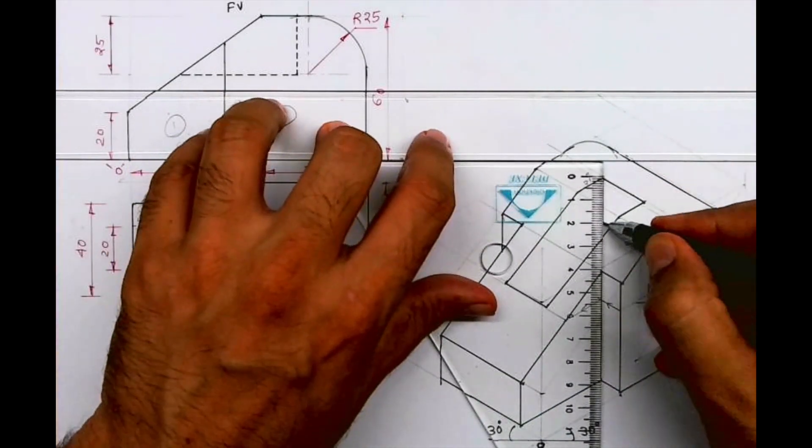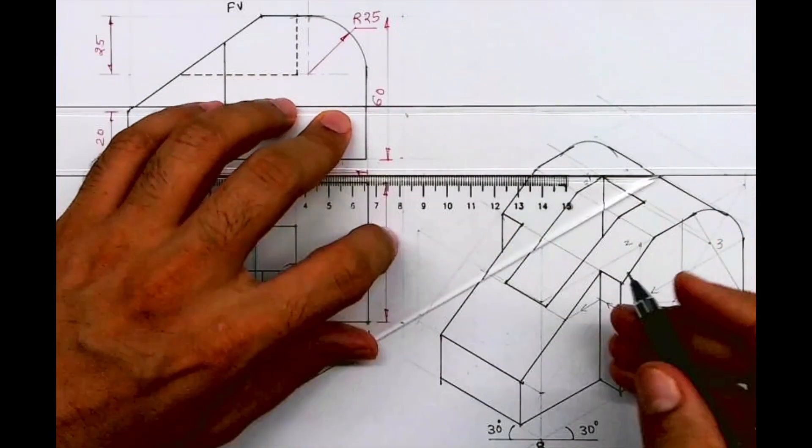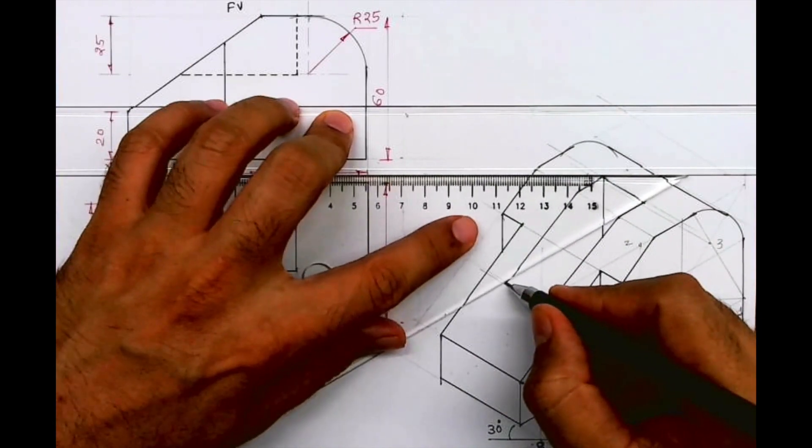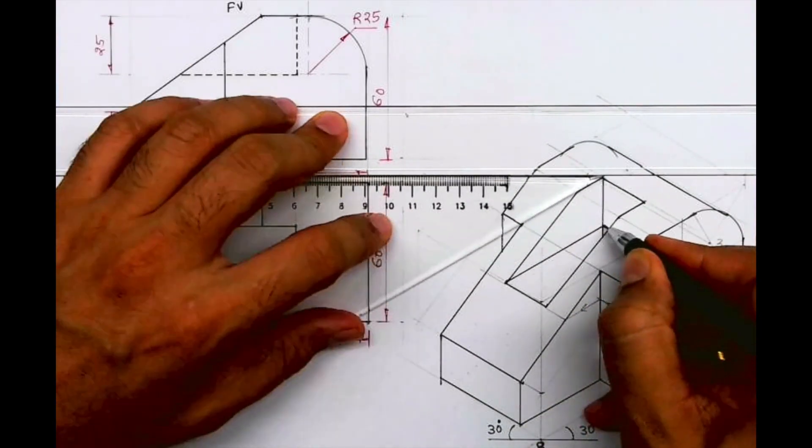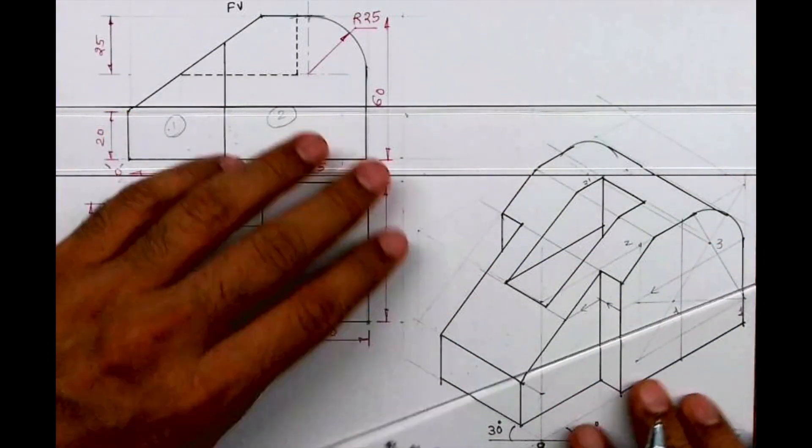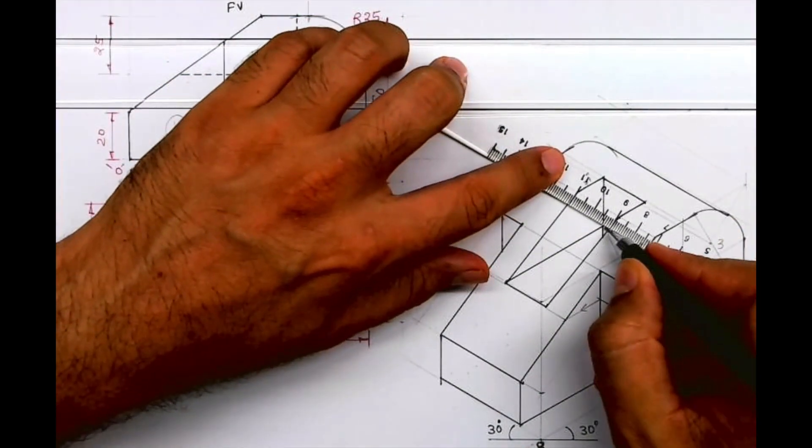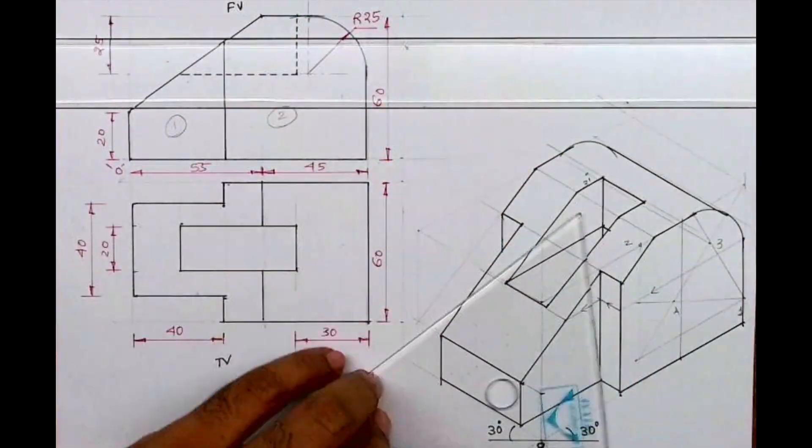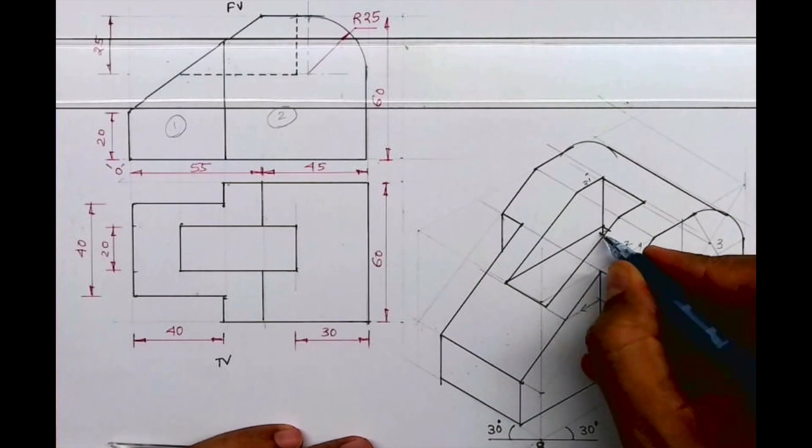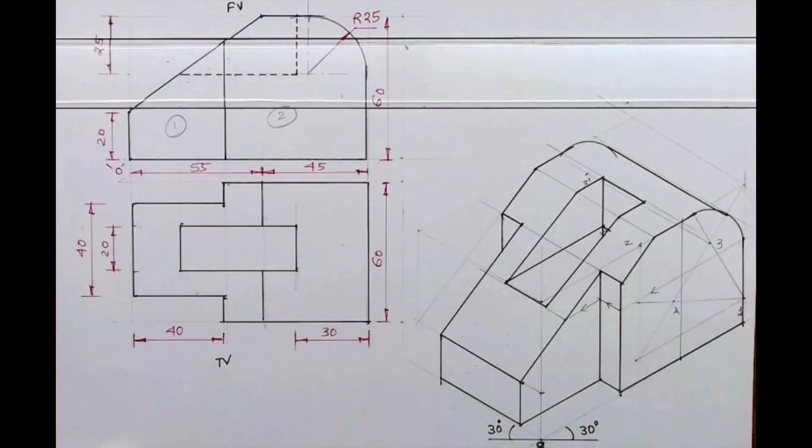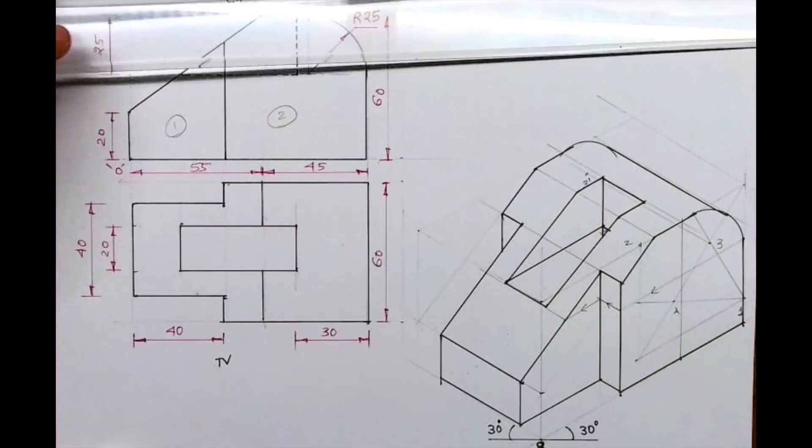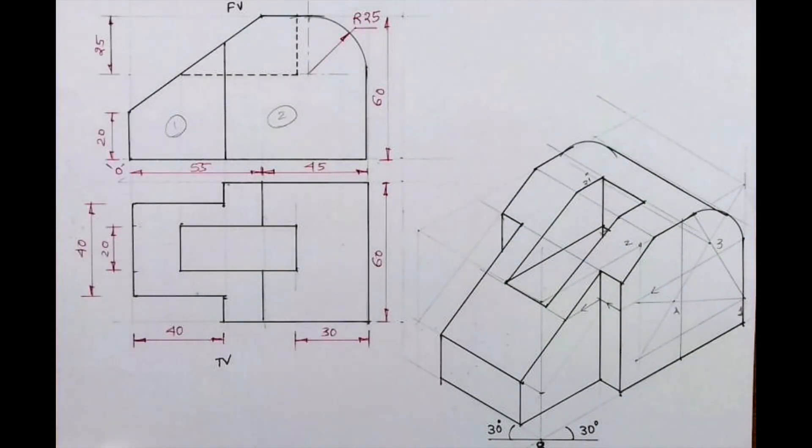And you go down by 20. Actually I made a mistake, I shouldn't have gone full down. It will intersect only till here, so only this much portion will be dark. The lower line we need to erase, see like this. So we are done with this slot. This line we need to erase, and we need to draw one more line which is dark. Apart from that, we are done with this isometric.